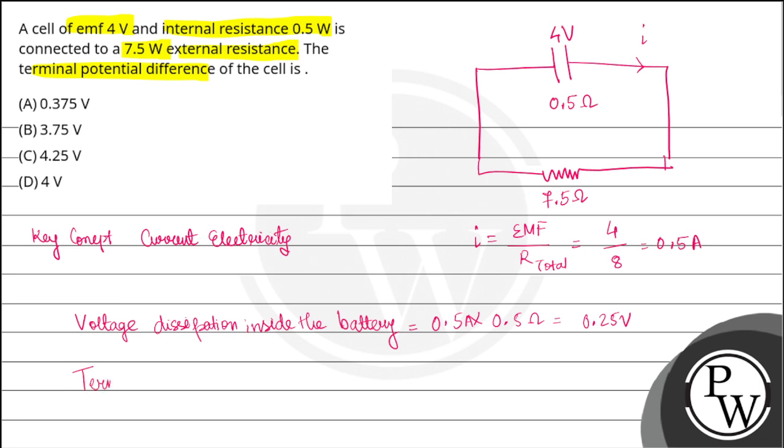Terminal potential difference will be 4 minus 0.25, that is 3.75 volts. That is option B. Hope you understand. Best of all.